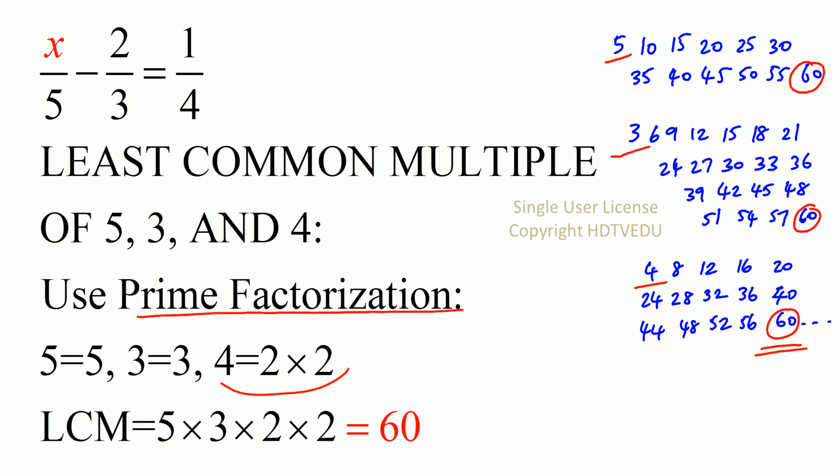So what is the maximum number of 3? 1, 3, 1, 5, and 2, 2s. So all you have to do is multiply 3 times 5 times 2 times 2, and you get 60. So the least common multiple of 5, 3, and 4 is 60.